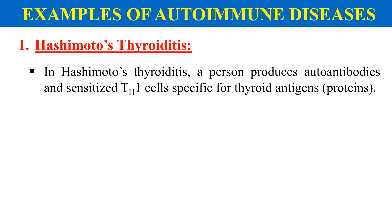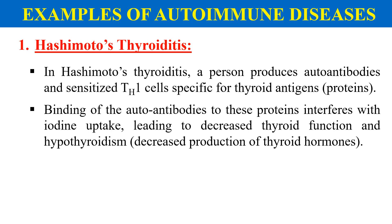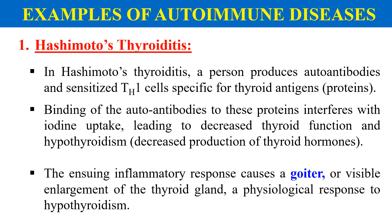The first example is Hashimoto's thyroiditis. Here the person produces autoantibodies and T helper cells sensitized towards thyroid antigens. These autoantibodies degrade the thyroid cells, resulting in decreased production of thyroid hormone. Due to the inflammatory response, there may also be development of goiter, which is a visible enlargement of the thyroid gland. This is an example of autoimmune disease in which autoantibodies degrade the person's own thyroid cells.